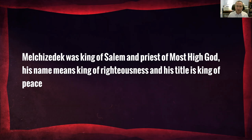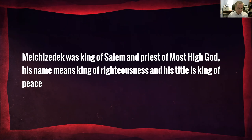He is also described as the king of Salem. Experts tell us we don't really know whether Salem is Jerusalem — the first record of that connection comes from Josephus and the Dead Sea Scrolls. It's not made clear in scripture. But the word Salem itself means peace — it's the root of the term shalom. So the writer of Hebrews tells us there is significance both in the name and the title of Melchizedek: he is the king of righteousness and the king of peace.